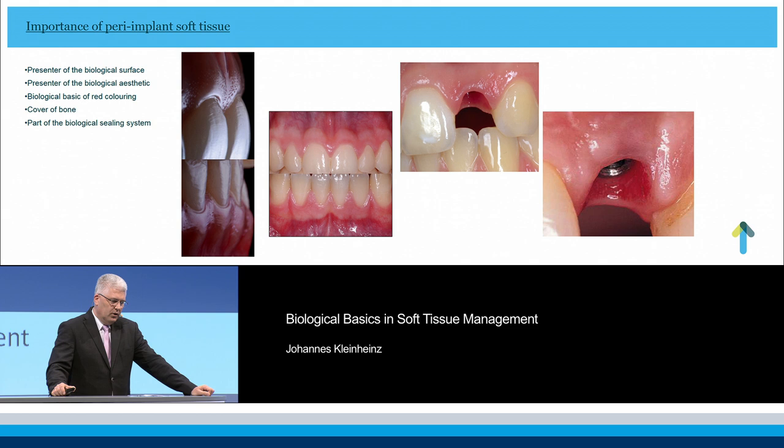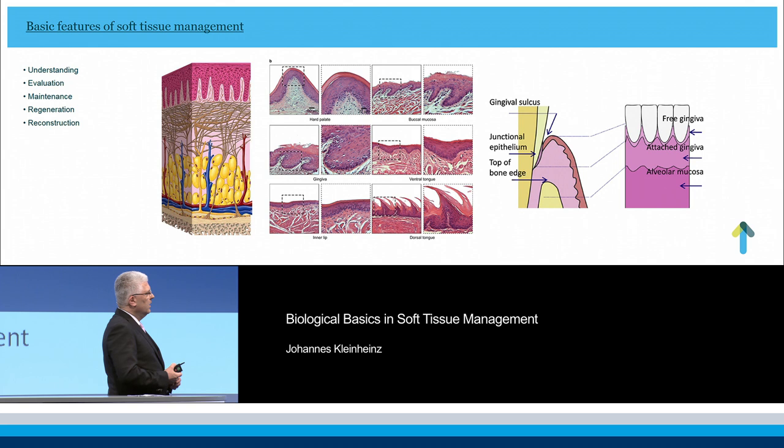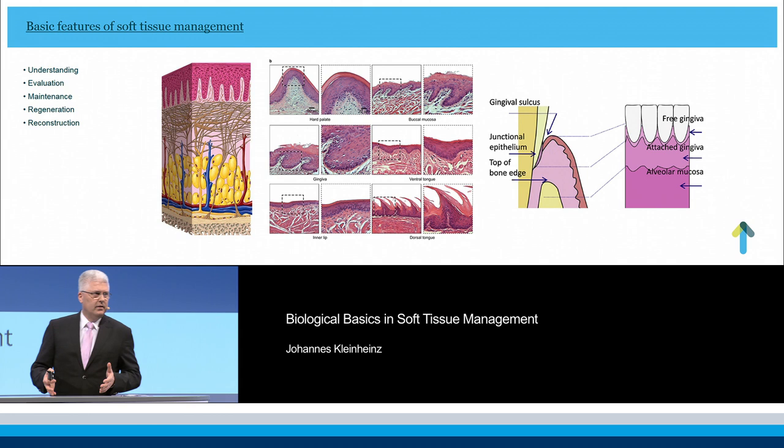Soft tissue is the presenter of the biological aesthetic — it's the biological basis of red coloring. It covers the bone and is part of the biological sealing system.